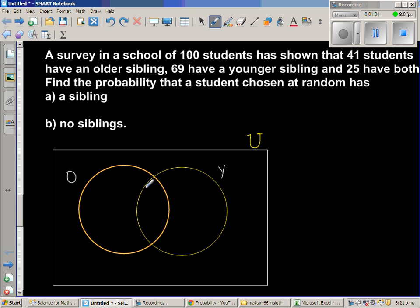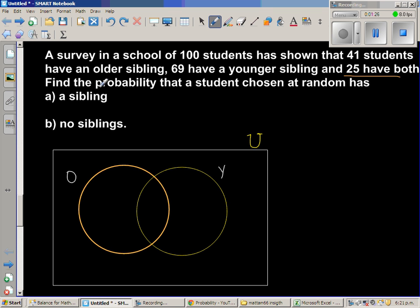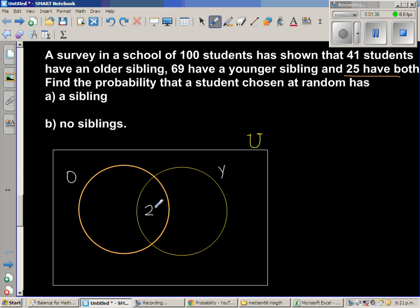Now this area, this area is the area which is common for O, that is the older sibling and the younger sibling. So first when we are writing numbers inside this Venn diagram, we should write whatever is inside this area. So here I read that 25 have both, that means 25 students have younger and older siblings. So I will write 25 here in this area.